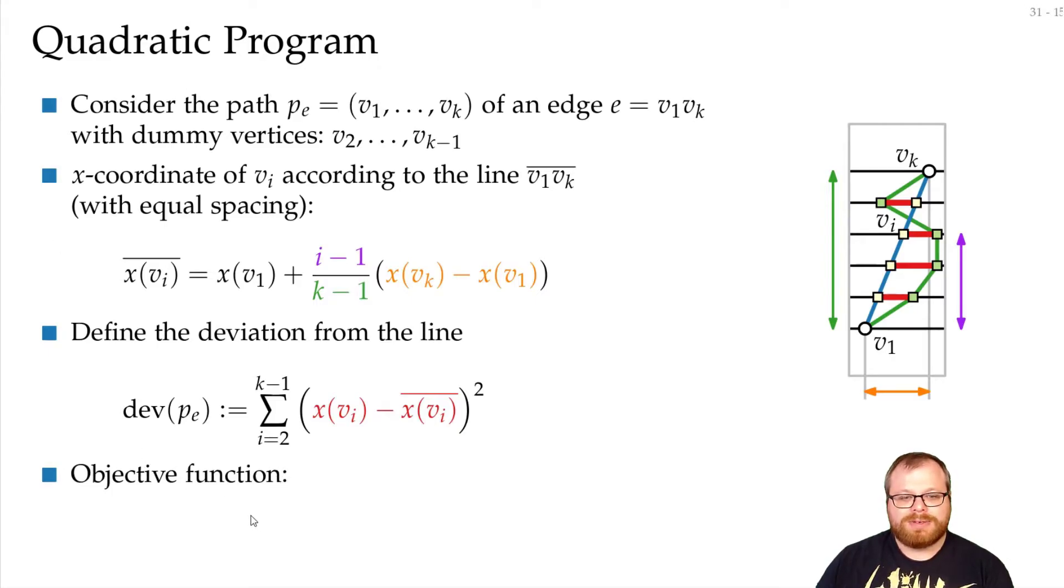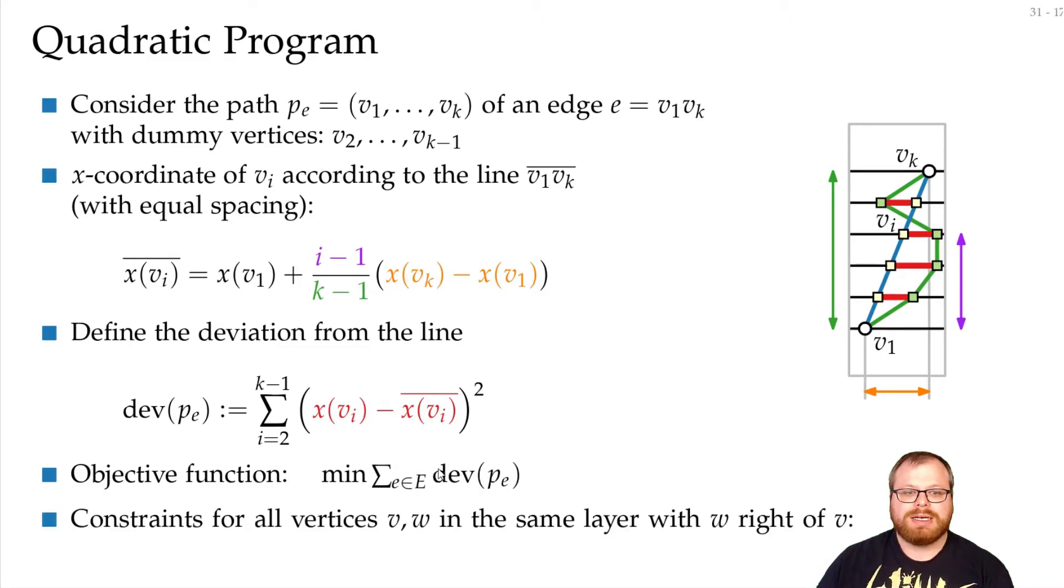Similar to the linear program, we have an objective function. And this is to minimize the sum of all deviations. And we have some constraints, that for all vertices in the same layer, where w is to the right of v, we have that the difference between the x-coordinates is at least some horizontal distance.